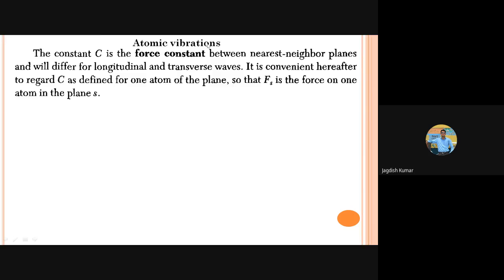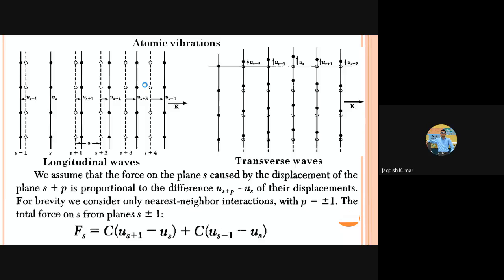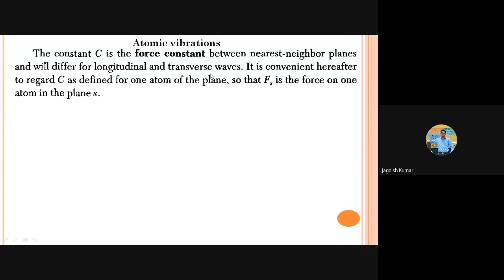The constant C, the force constant, depends on bond strength and is different for longitudinal and transverse cases. In the longitudinal case, the bond is directly stretched, so C is likely higher. In the transverse case, it is like stretching a spring perpendicular to its length, so C is lower. We keep C general and derive a general formalism; then for each specific case we substitute the appropriate value of C.